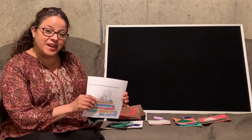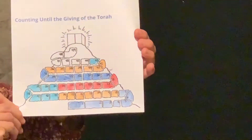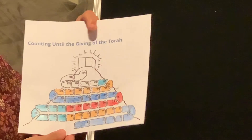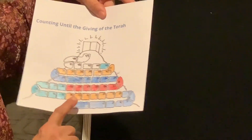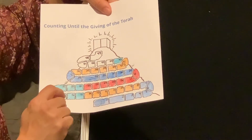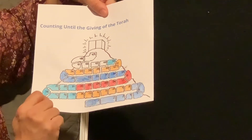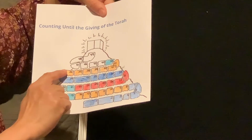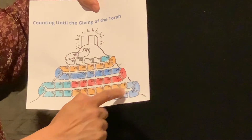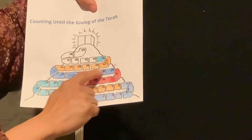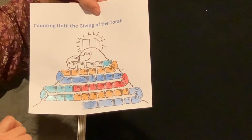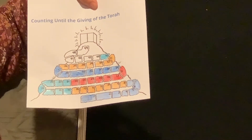Do you have your calendar ready? We're at 3, 4, 5, and 6 weeks and 1 day. And do you notice something about this pattern? It looks like it's going up the mountain, right? It is! It's supposed to look like a mountain — going up to receive the Torah.